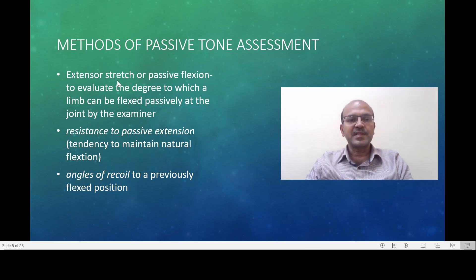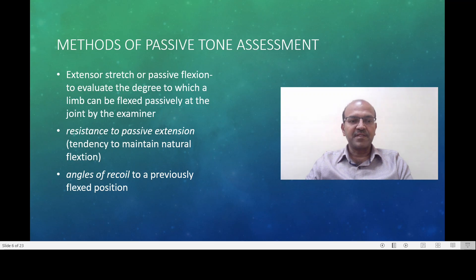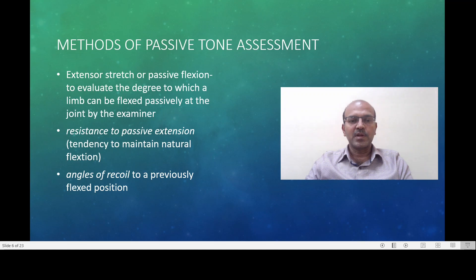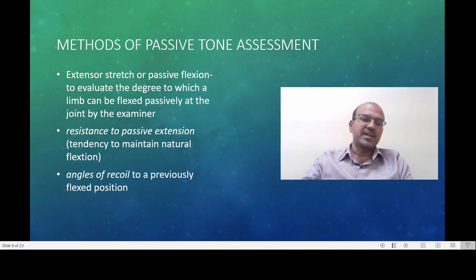Passive tone can be assessed using extensor stretch or passive flexion, evaluating the degree to which a limb can be flexed passively at the joint by the examiner. There is also resistance to passive extension, where there is a tendency to maintain natural flexion — arm recoil is an example. Angles of recoil from a previously flexed position are observed by extending the limb and seeing how long it stays in that position.